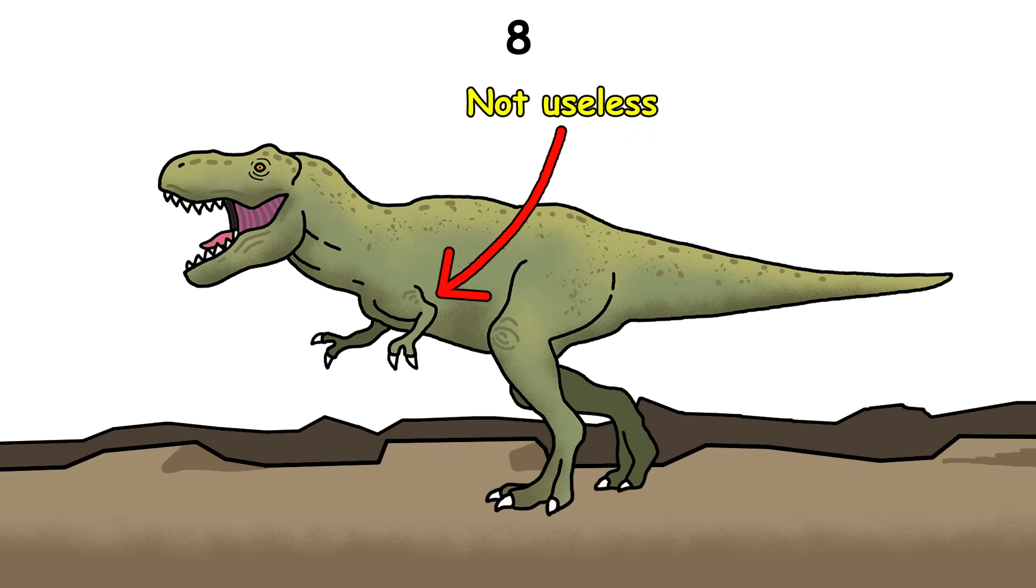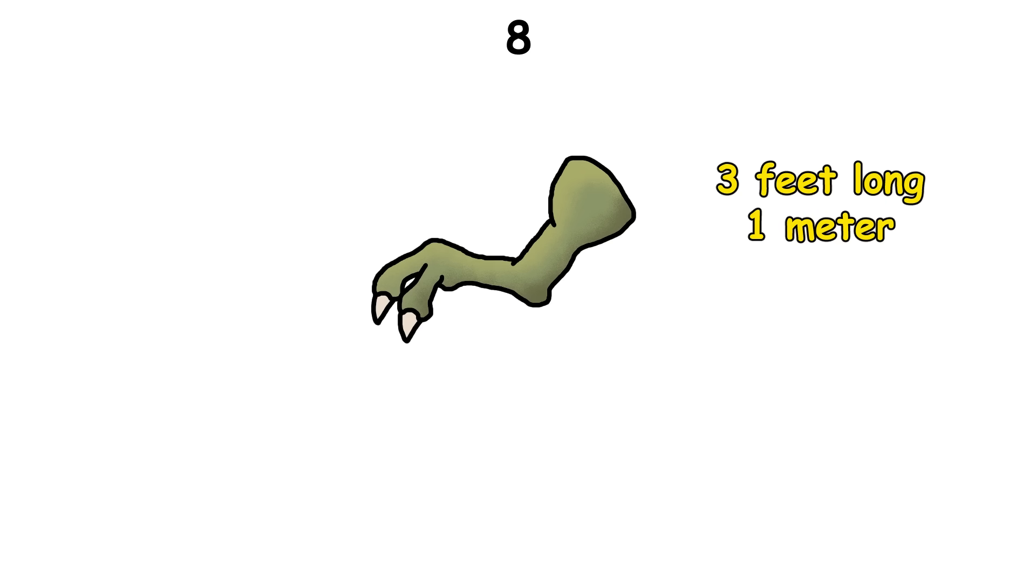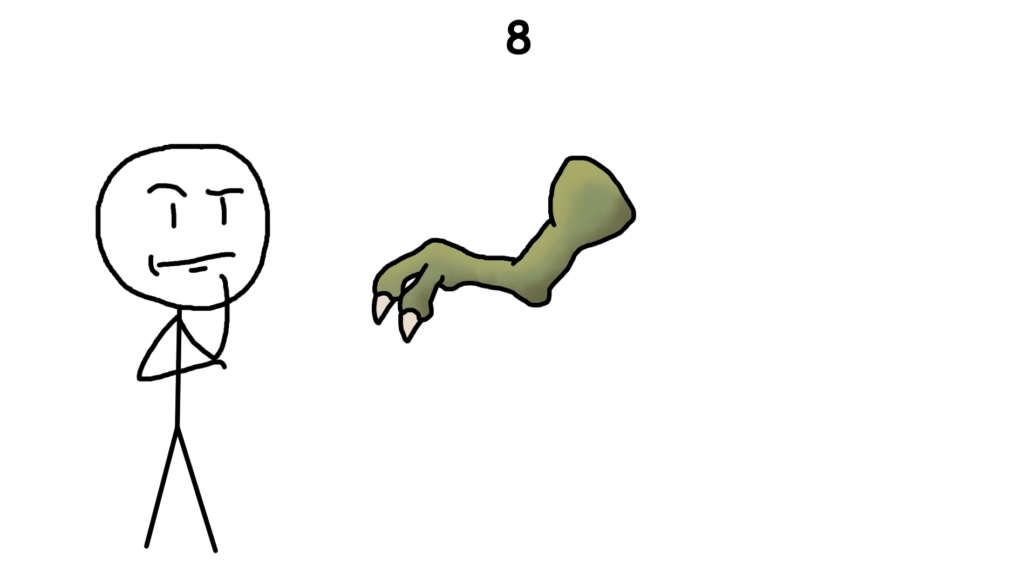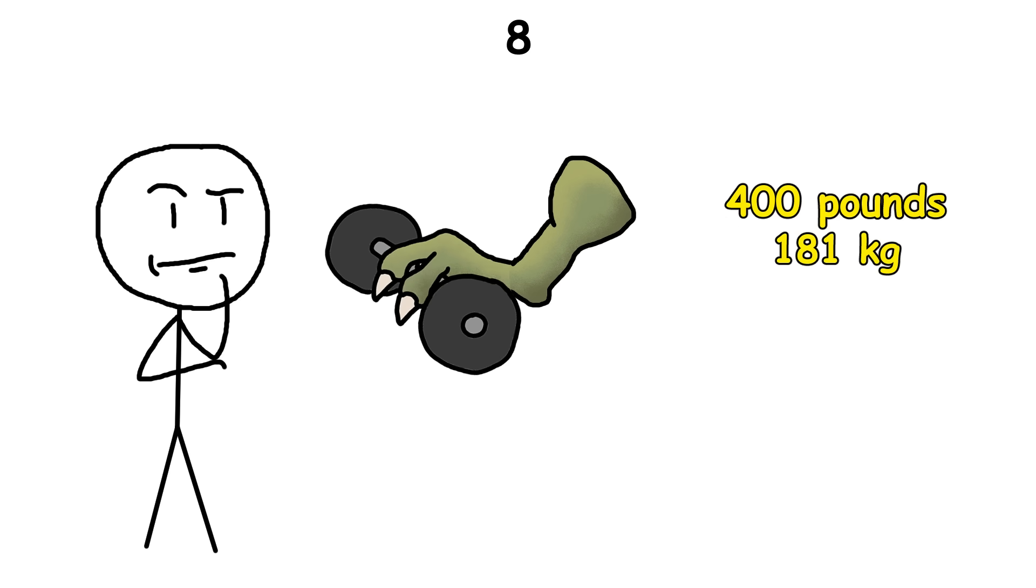T. rexes didn't have useless arms. They were short, about 3 feet long, which is about the same size as a human arm, but they were really strong. Studies estimate that a T. rex could curl over 400 pounds with each arm.